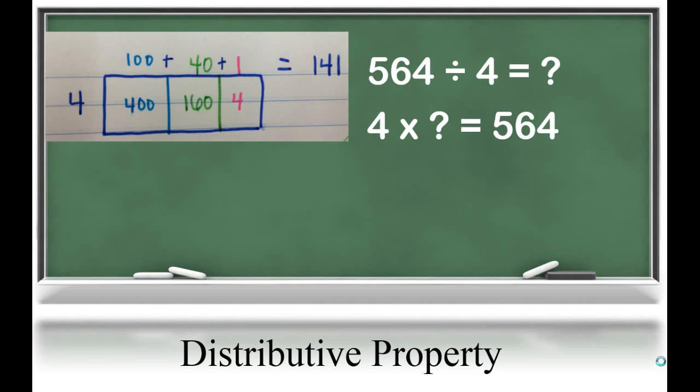just like we used in our distributive property and partial products in multiplication. We know that we have 4 times some number, and it's going to equal 564. We need to break 564 into smaller numbers that are easily divided by 4.